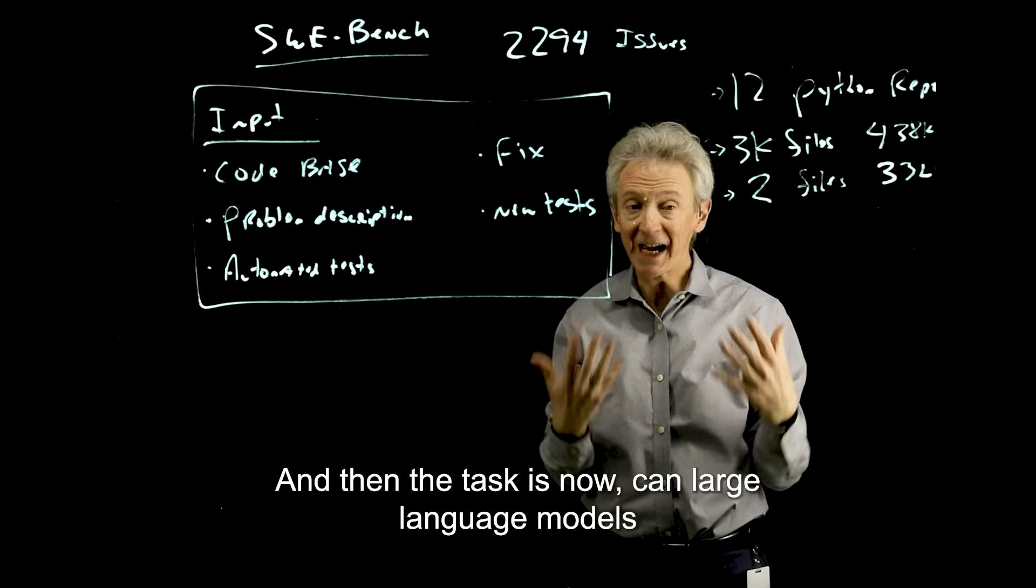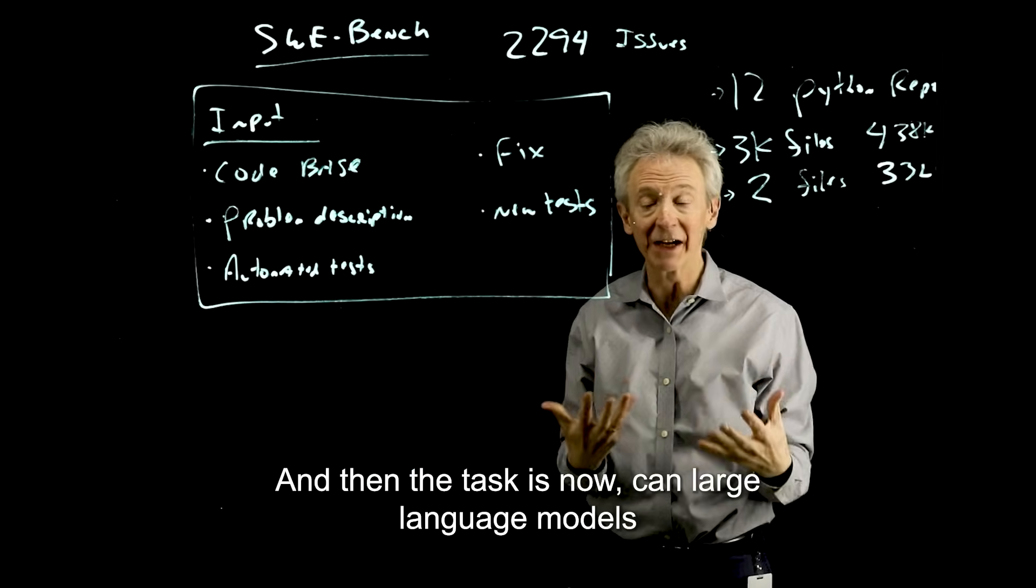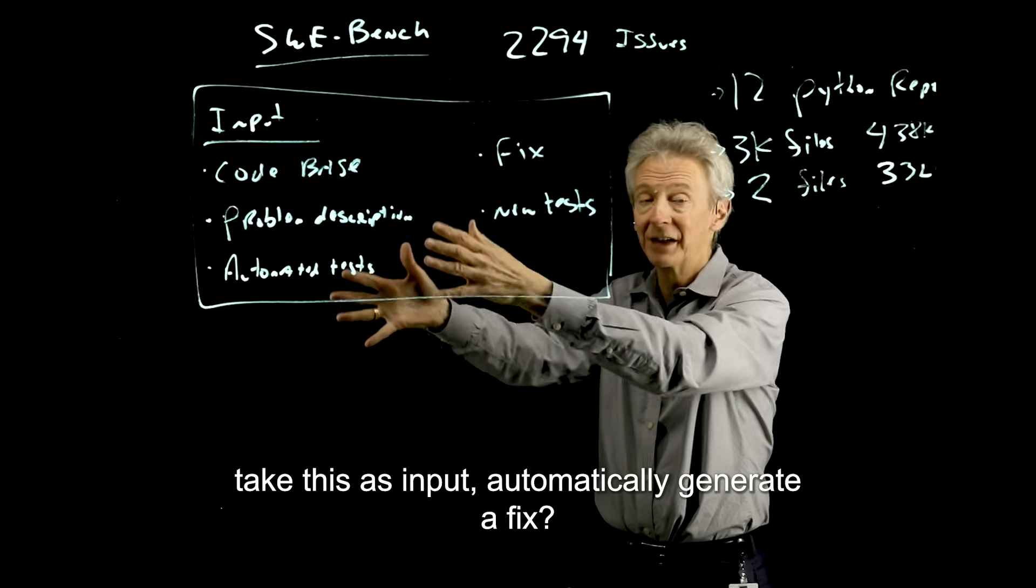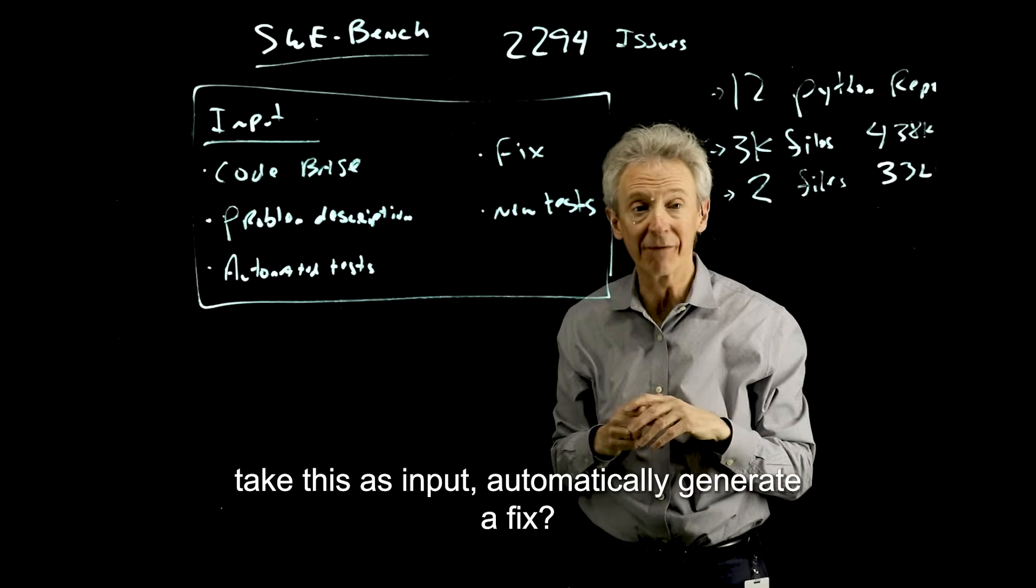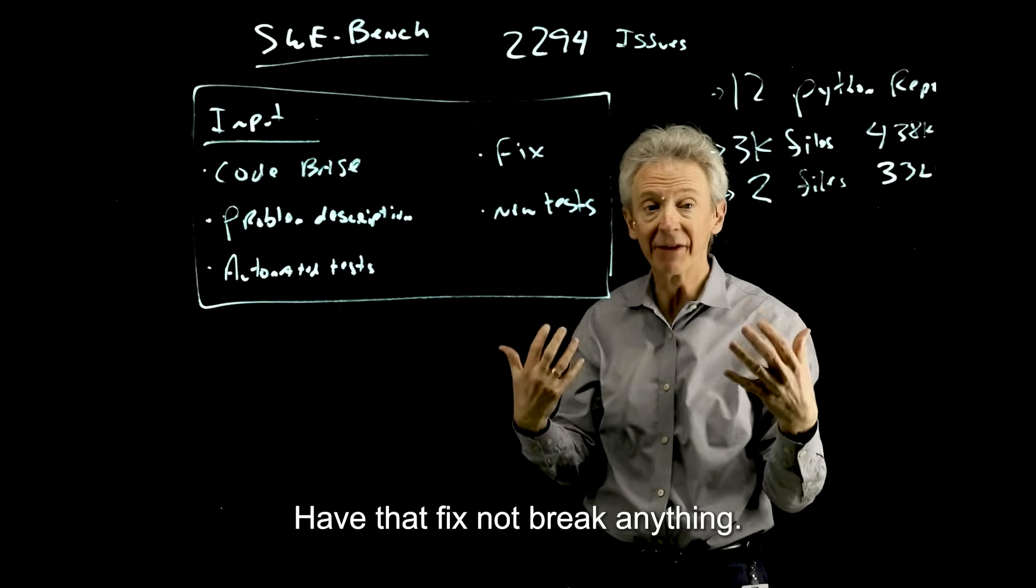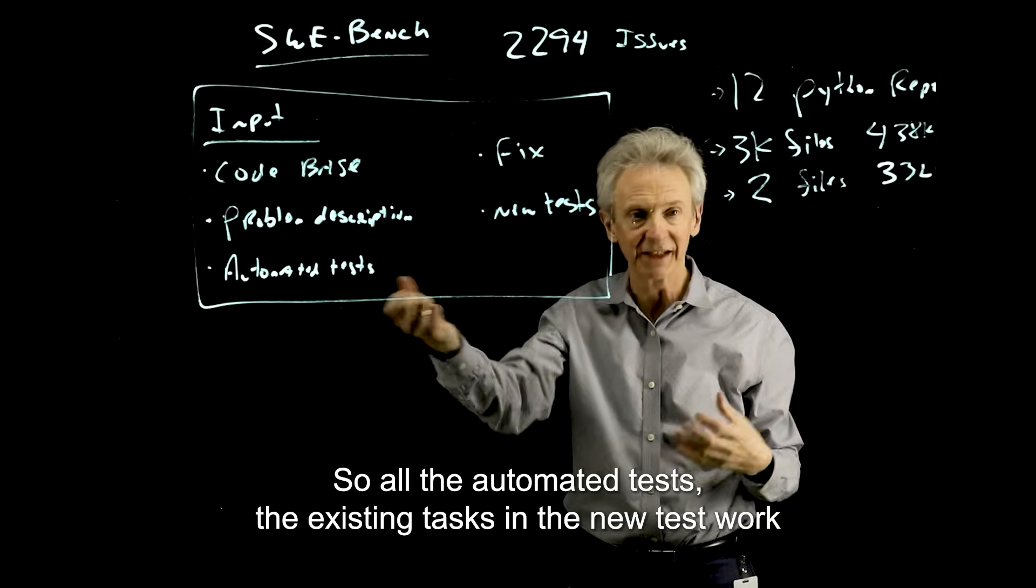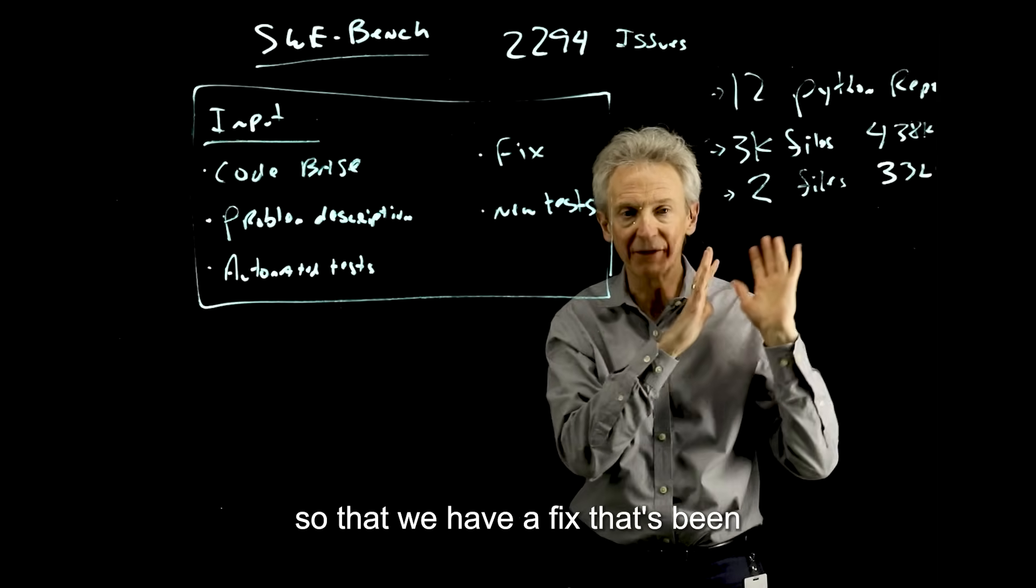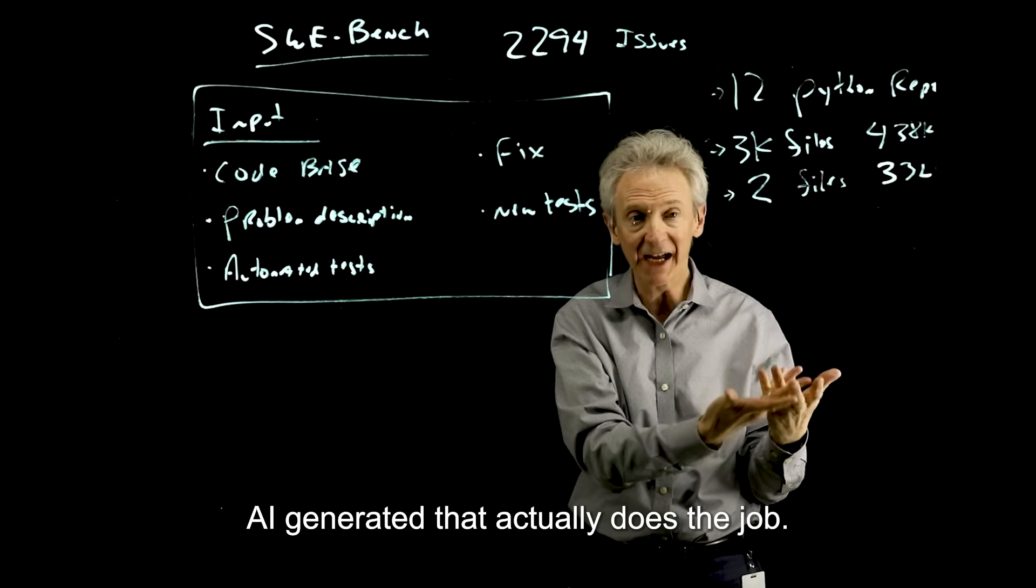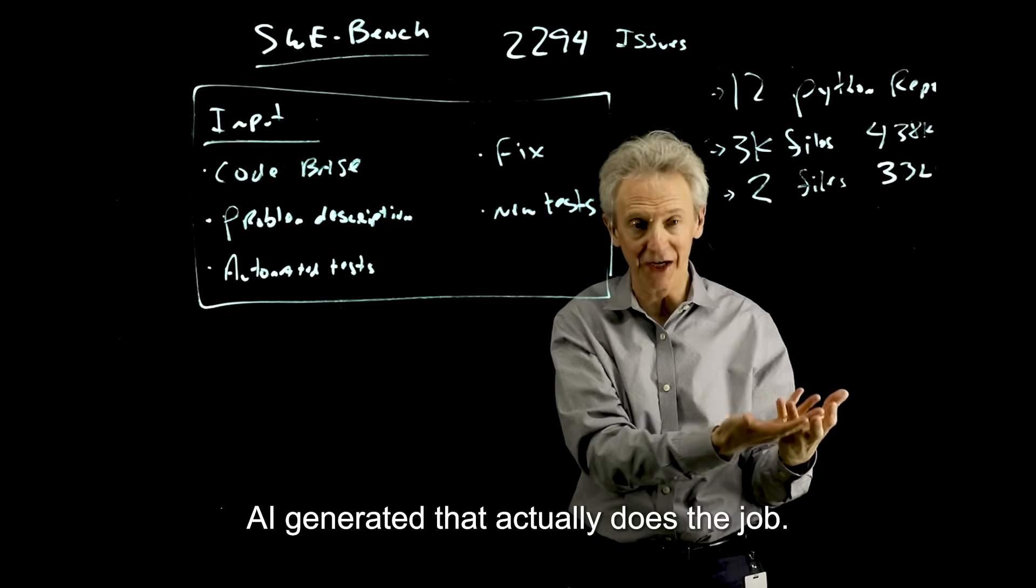And then the task is now, can large language models take this as input, automatically generate a fix, have that fix not break anything. So all the automated tests, the existing tests and the new tests work so that we have a fix that's been AI generated that actually does the job.